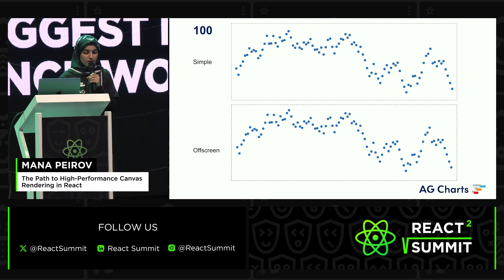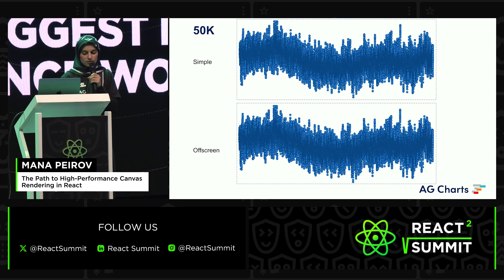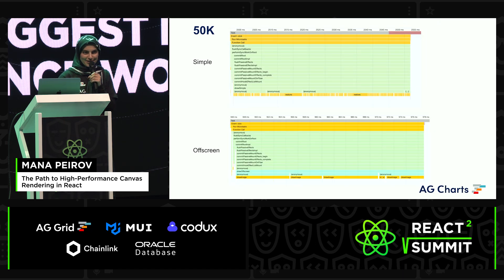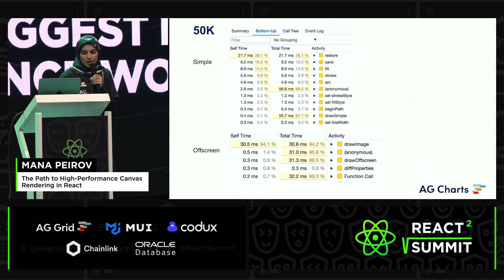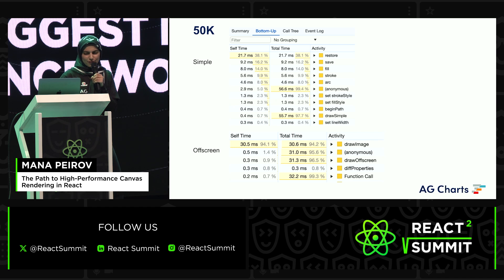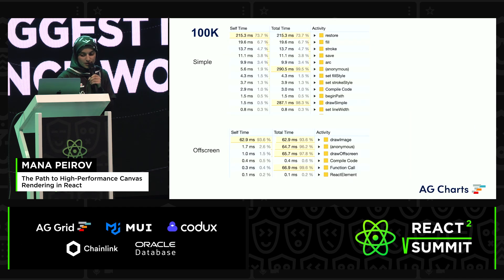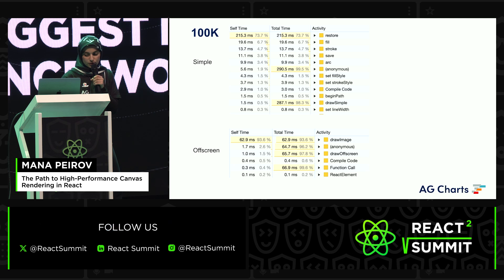First off, it solves the drawing issue we had earlier — it looks exactly the same as rendering individually. But is it faster? Yes, it is — slightly, not as fast as I'd hoped, but still pretty impressive. For the 50,000 case it takes 32 milliseconds compared to 56. For 100,000 it's even more impressive: 67 milliseconds compared to 300 milliseconds. So the more data you have, the more apparent and more performant this technique becomes.